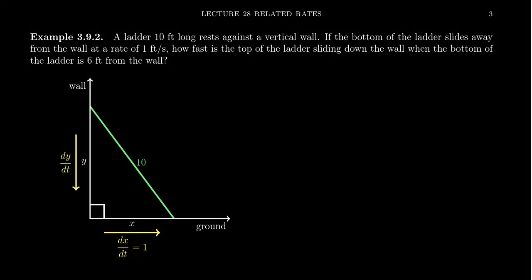Imagine that a 10-foot long ladder is resting against a vertical wall — and as long as you're not in Italy, you don't have to worry too much about the wall not being vertical. We have a vertical wall, meaning it forms a 90-degree angle with the ground. That's all we really care about.